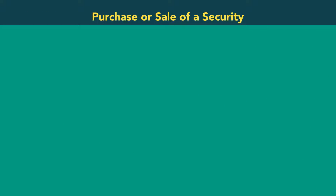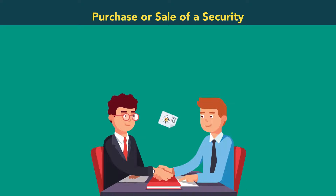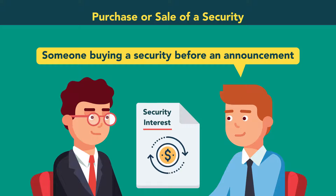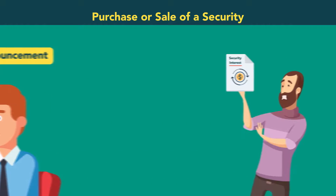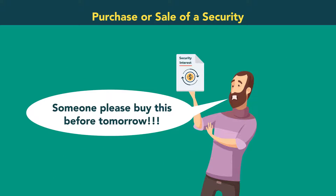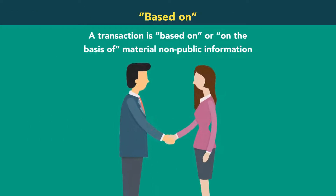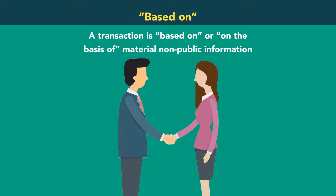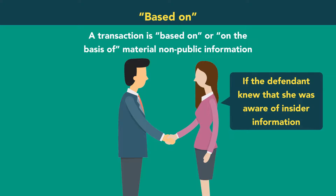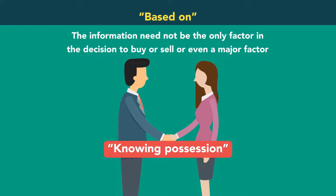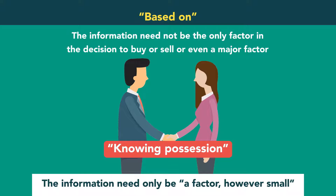Purchase or Sale of a Security. The insider trading prohibition reaches purchases and sales of securities. We often think of insider trading as someone buying a security before an announcement. Many insider trading cases, however, involve selling securities to avoid losses before bad news is announced. Based on: a transaction is based on material non-public information if the defendant knew that she was aware of insider information. This is sometimes referred to as knowing possession. The information need not be the only factor, or even a major factor, in the decision to buy or sell. Rather, the information need only be a factor, however small.